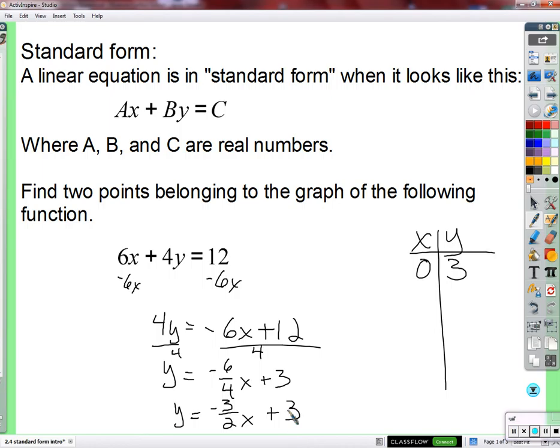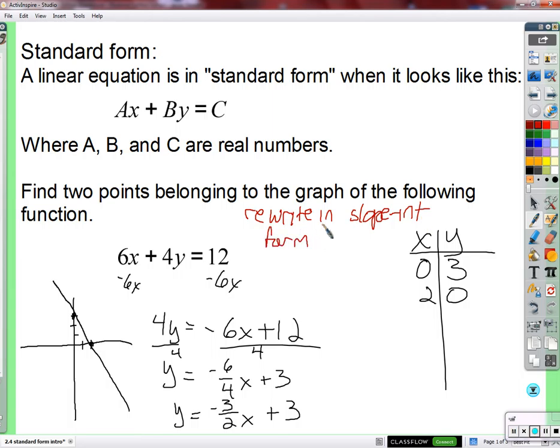So how would we use that to graph? You can plug in 2 for x. Plug in 2 for x. So we plug in zero, we got 3. You get 2 times negative 3 halves. 2 is going to cancel. We're going to get negative 3 plus 3. So we just have to get a zero in there.